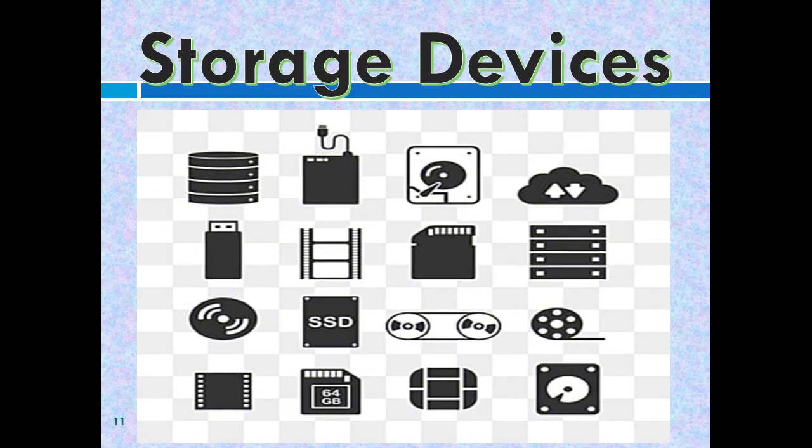Storage devices help our computer remember information we need. They keep our data until we are ready to use them again and help us save time and energy. Now that we have learned about the many ways computers help us, we are ready to start using them. But like all other machines, computers must be used correctly so that they will last. They have to be taken care of. In this section, we will learn how to correctly switch the computer on and off, and also learn some helpful habits when using them.